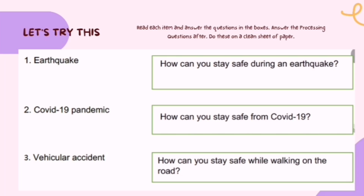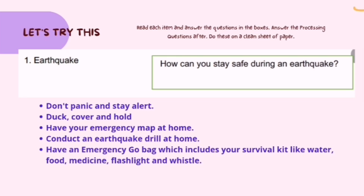Let's try this activity. Read each item and answer the questions in the boxes, then answer the processing questions after. Do this on a clean sheet of paper. We have three situations: Number 1 — Earthquake: How can you stay safe during an earthquake? Number 2 — COVID-19 pandemic: How can you stay safe from COVID-19? Number 3 — Vehicular accident: How can you stay safe while walking on the road?